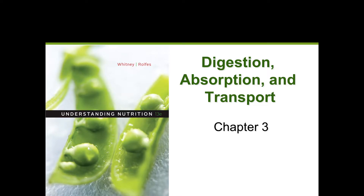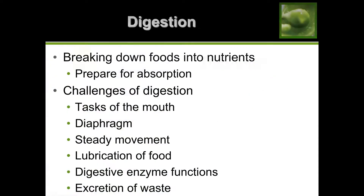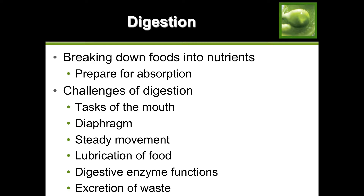Let's get started with chapter three - digestion, absorption, and transportation. Digestion is the breaking down of foods into nutrients for our bodies to absorb and subsequently use. Digestion begins in the mouth, where we have both chemical and mechanical digestion. Mechanical digestion is mastication or chewing, and chemical digestion involves breaking down starches with your saliva.